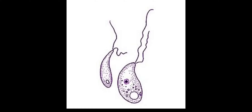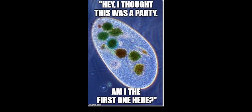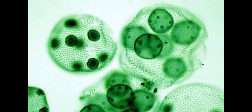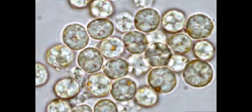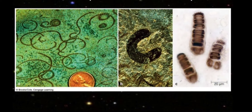Any eukaryote organism that reproduces using a gamete that has two flagella falls into the category Biconta. At this most basic, early stage, these were archaeoplastidae, red and green algae, and chromioblata, like brown algae and kelp.